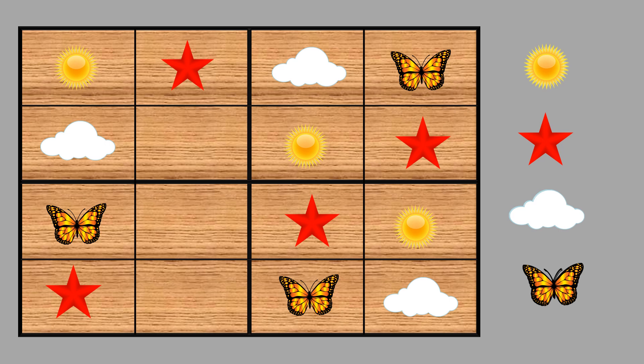Now we are nearly finishing the game. Now we can consider this row. You can select this or this as well, but let's go for this. So here we can see star, butterfly, and cloud. So the remaining one is sun. That's correct.